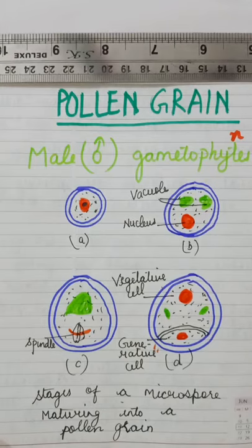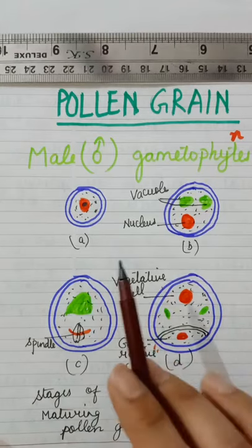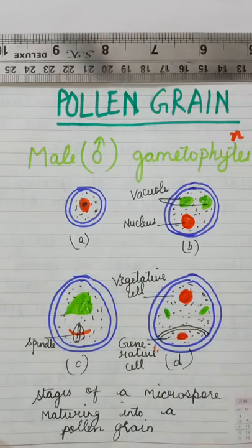The microspore is the first cell of the gametophytic generation. This is a microspore - stages of a microspore. How can it develop into a pollen grain?